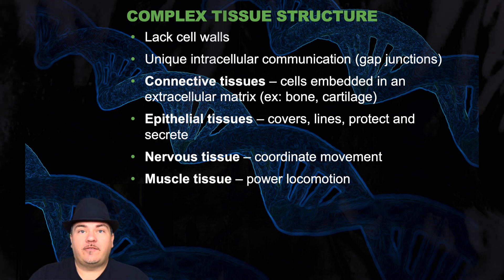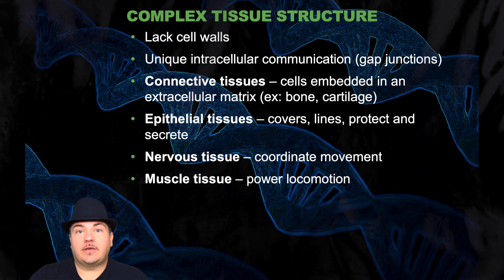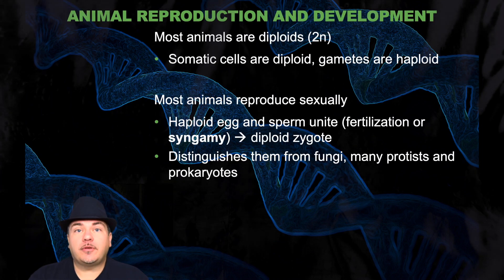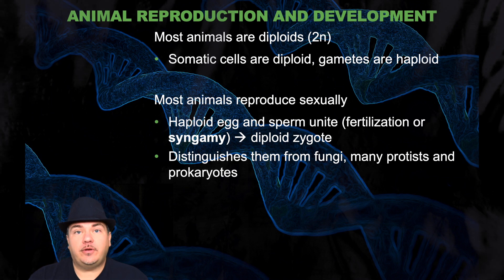They have epithelial tissues, which cover, line, protect, and secrete. They have nervous tissue, which coordinates movement. And they have muscle tissue, which powers locomotion. Most animals are diploid, so the somatic cells are diploid, whereas the gametes are haploid.